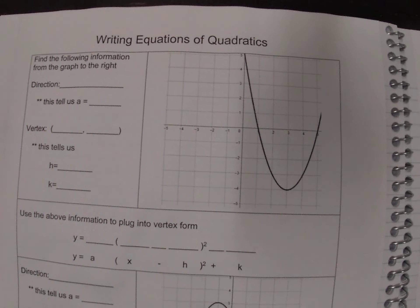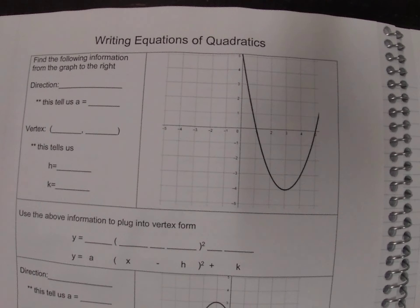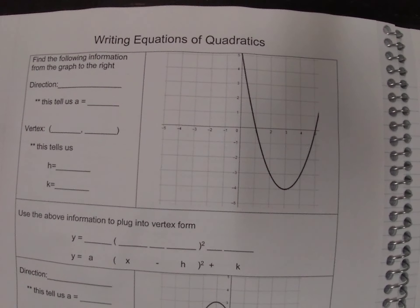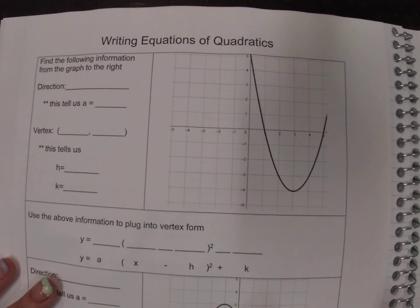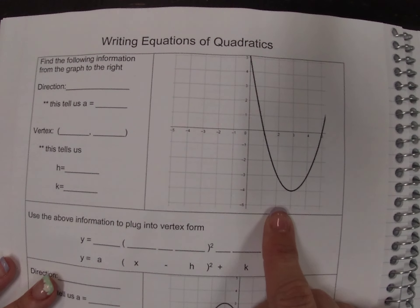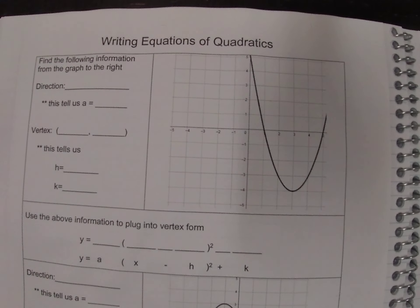Today we are going to be looking at writing equations of quadratics. We are going to be taking the idea that we've been doing with graphing quadratics and now doing that in reverse. So if we are given a graph of a quadratic, we are going to consider the key features we needed to be able to graph it.